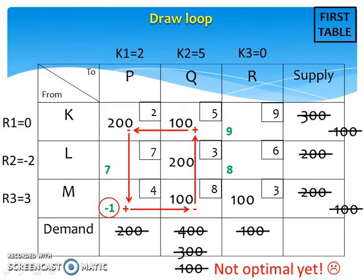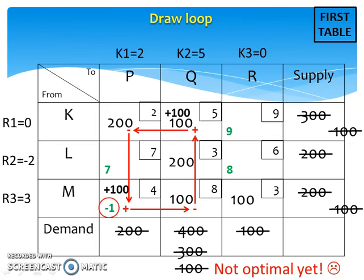Next, look at the loop, look at the squares with minus sign, and look at the values assigned. Choose the smallest value. Here, between 200 and 100, the smallest value is 100, so add 100 to the assigned value at the squares with plus sign, and subtract 100 from the assigned value at the squares with minus sign.